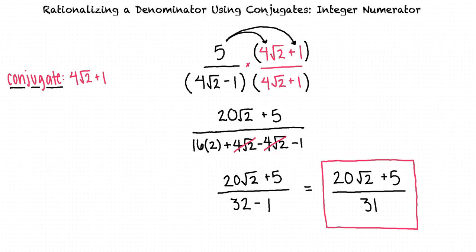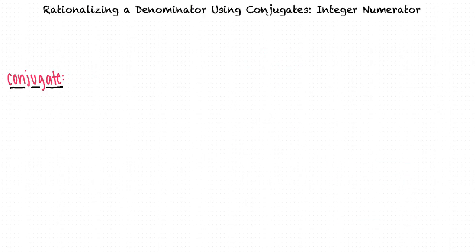I think that's starting to make sense. Can we try another example? Let's rationalize the denominator and simplify the expression 3/(5 + 2√3).